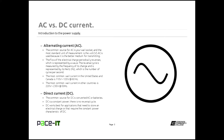The reversal cycle is measured by the frequency of its change — how frequently it changes — and is represented by its hertz, that is the cycles per second. The most common wall current in the United States and Canada is 110 to 120 volts at a 60 hertz cycle. The most common wall current in other countries of the world is 220 to 230 volts at a 50 hertz cycle.